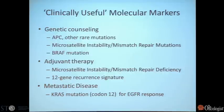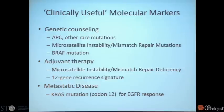The first and very important is genetic counseling. It's important for us to identify families that have inheritable mutations that cause cancer. I'm going to spend quite a bit of time talking in particular about mismatch repair deficiency during this talk. BRAF mutation falls into this category as well, although that can also have implications in the metastatic setting.